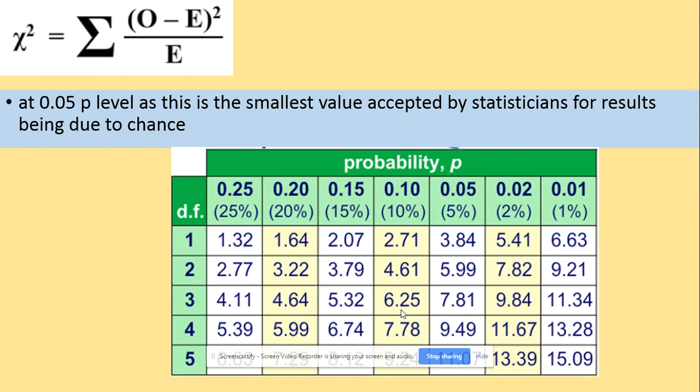So what we will be comparing this to, we will be comparing the values, the chi-squared value with the p-level. So 5% is the smallest value accepted by statisticians for the results to being due to chance. So if you are in this range here, up to including 5%, any of the results, difference in the results will be due to chance.